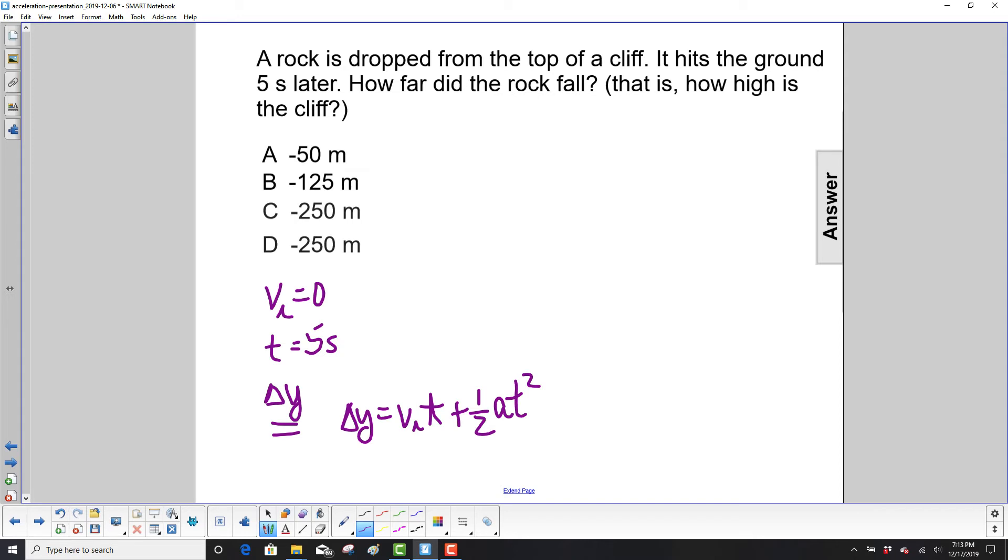Now what do we have? We have time, that's good. Our initial velocity is zero, and then what's our acceleration? Well, we're in a gravitational field of the earth, so a will equal minus g. Negative means we're in the down direction.